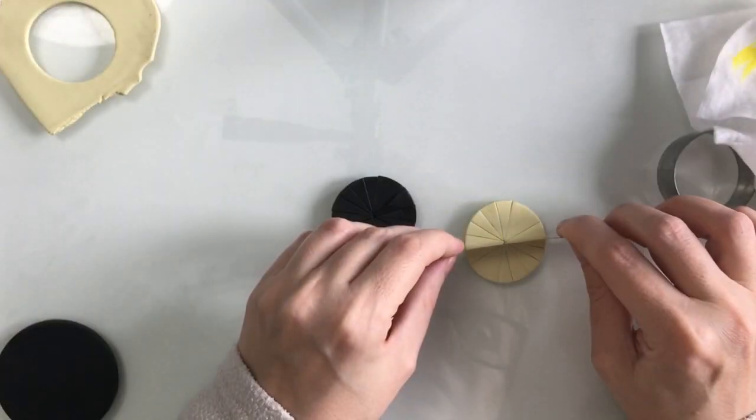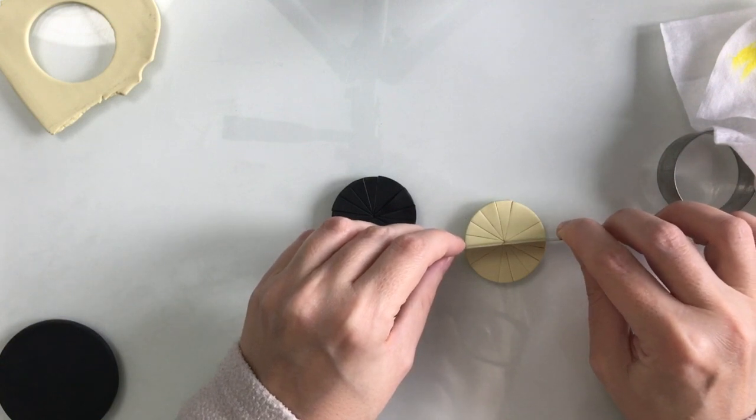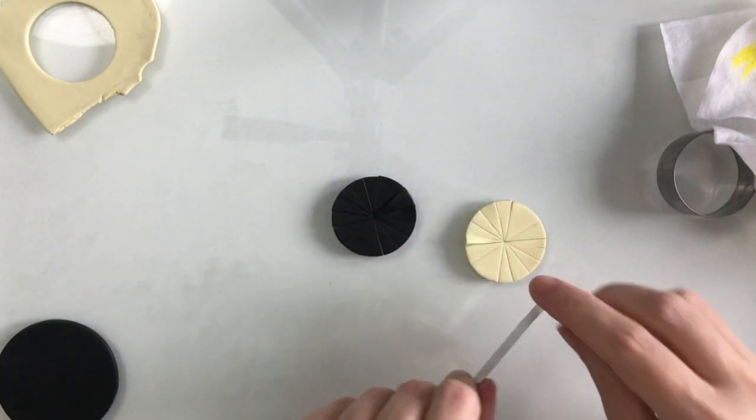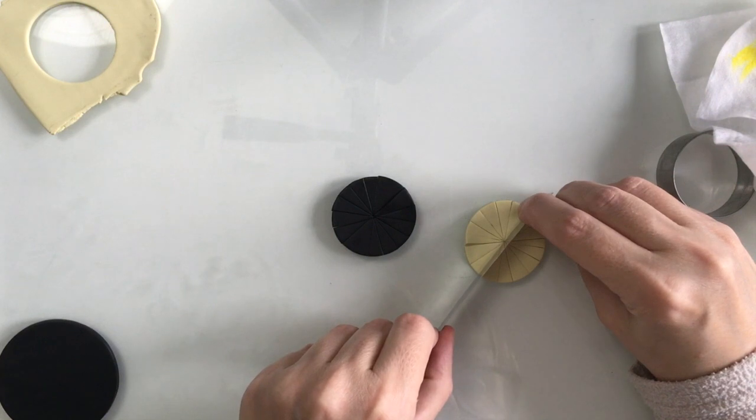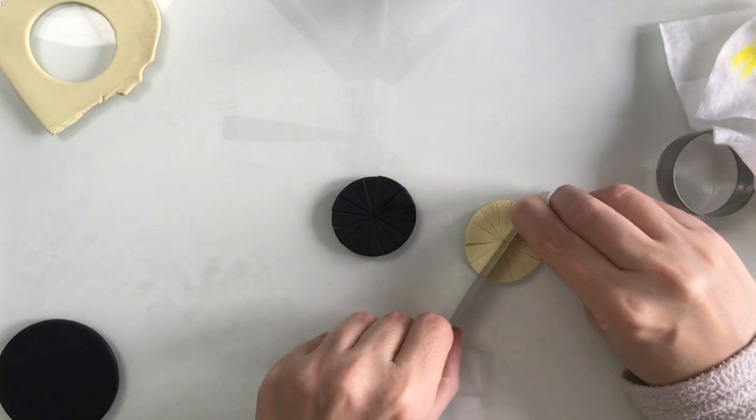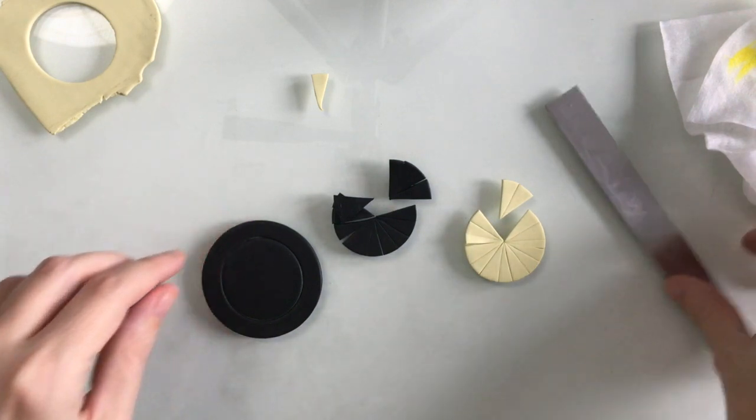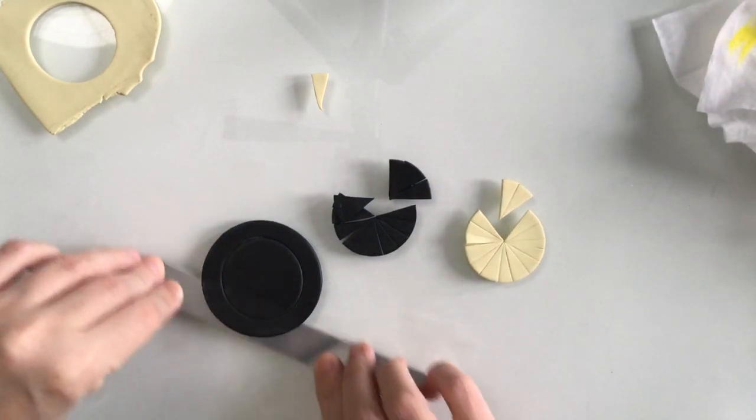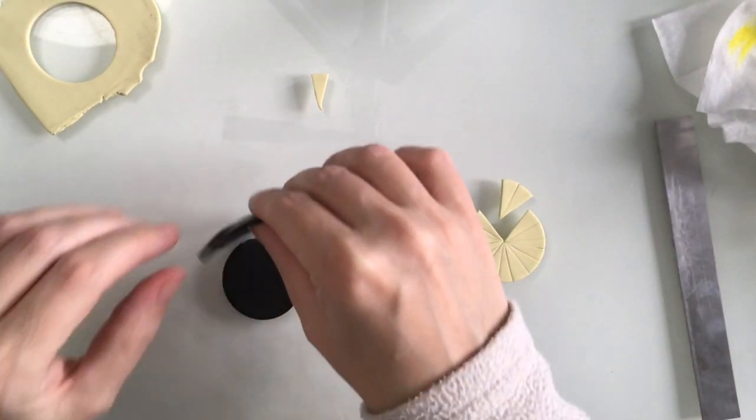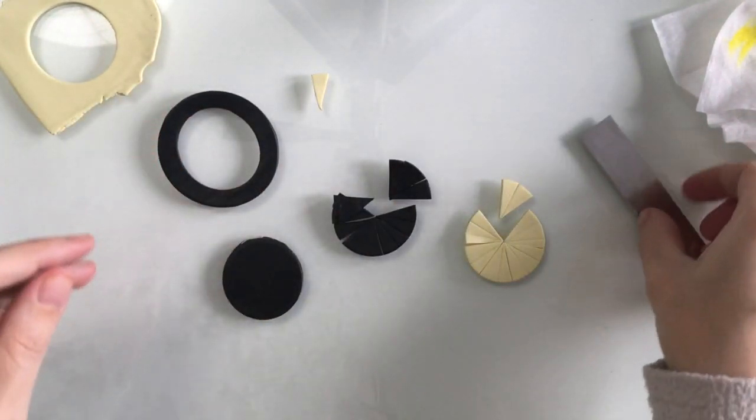I'm going to go all Trivial Pursuit here and cut the circles into small triangular sections. There'll be 16 of each from each circle, and I'm just going to cut a round center out of the larger black circle, which I could have used actually for the little pies, but not to worry.